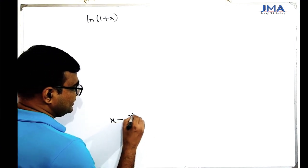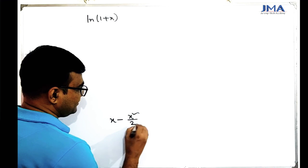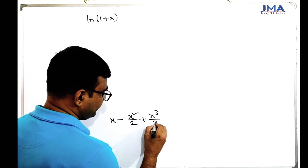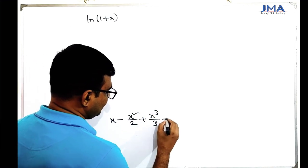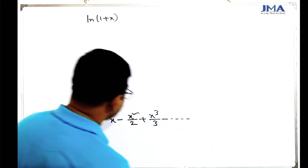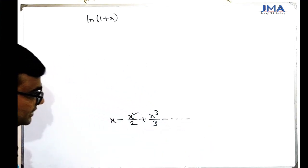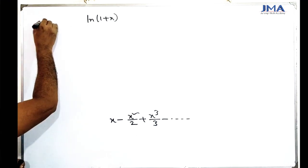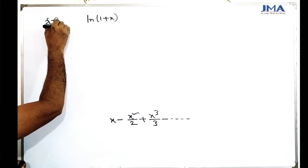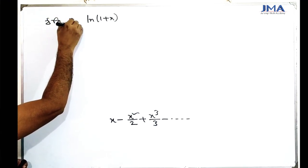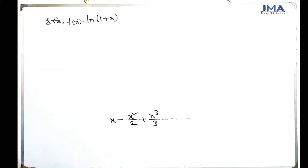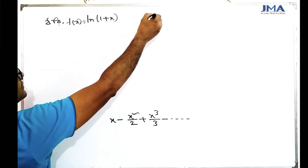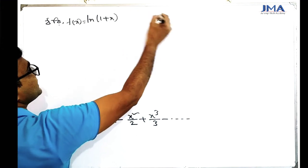The series for ln(1+x) is: x minus x²/2 plus x³/3 minus... We need to find f(x) and its derivatives. First, f of x is ln(1 + x).